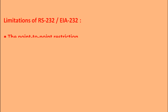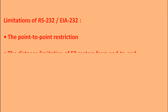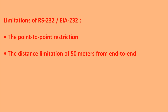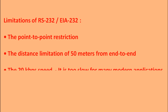The main limitations of EIA-232 when used for instrumentation and control equipment in an industrial environment are: point-to-point restriction — it enables communication across only two points, which is a severe limitation when several smart instruments are used; distance limitation of 50 meters end to end, which is too short for most control systems; and a maximum speed of 20 kbps, which is too slow for many modern applications.